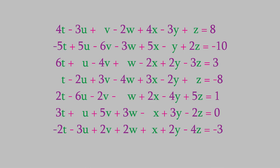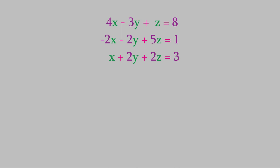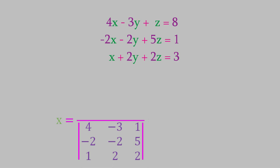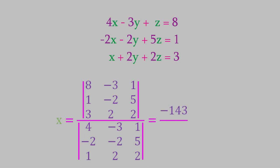Here's how we do it. The value of each variable can be expressed as a fraction. To calculate x, the denominator of the fraction is a determinant made from the coefficients of the x, y, and z terms in each of the equations. The numerator is almost the same determinant, except that the coefficients on the variable x are replaced by the answers to the equations. We find that the numerator is equal to negative 143 and the denominator is negative 85, so the value of x is 143 over 85.